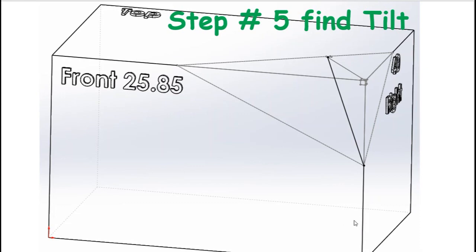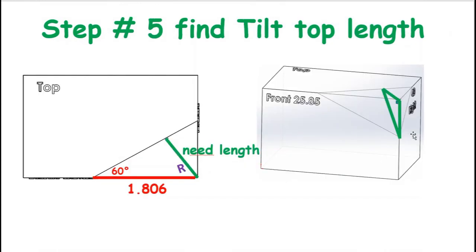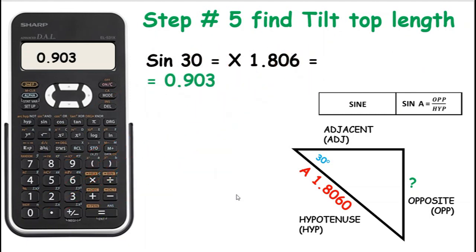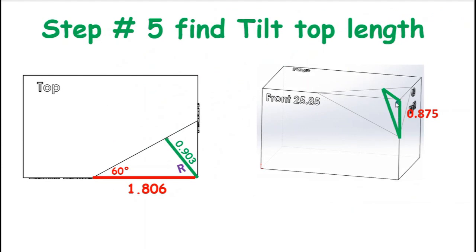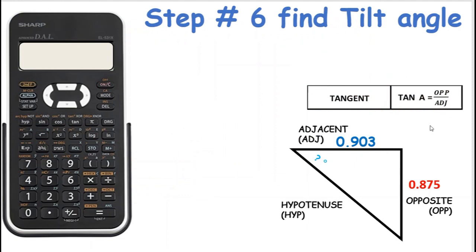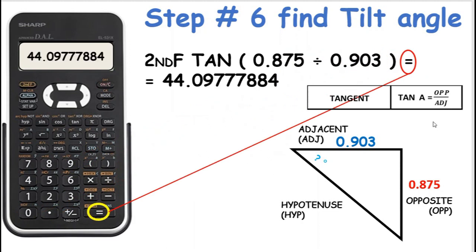So now we want to find the tilt. We want to find the length of tilt — this top length here. We have this length and this angle, so we can find this length. Our top length is going to be 0.903. Now we want to find our actual tilt angle here. We know the length from here to here is 0.875 — it's opposite over adjacent again, so we're going to use tan. Second function tan. Our tilt angle is 44 degrees.